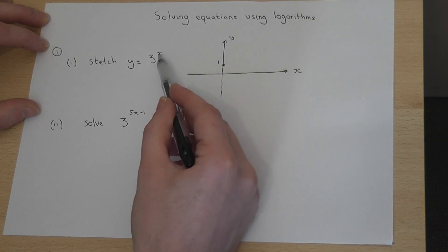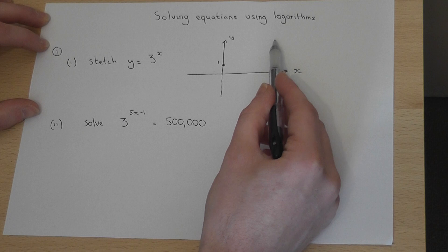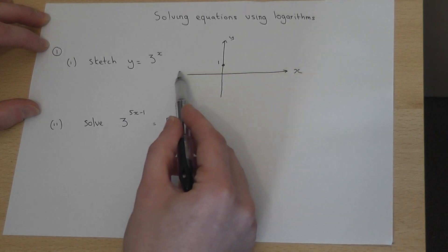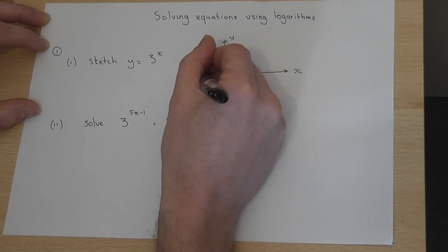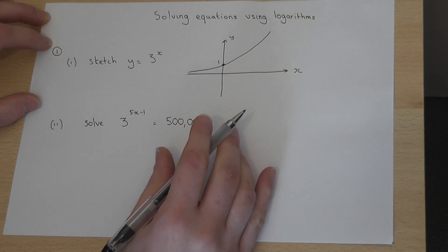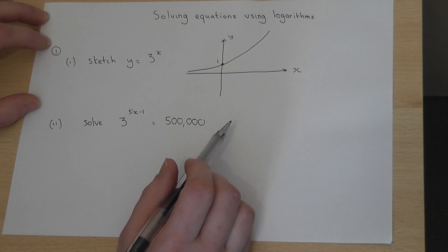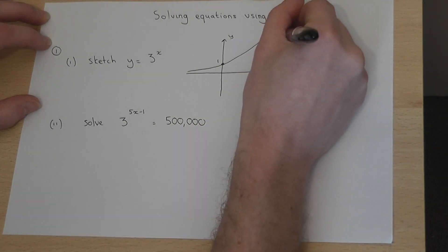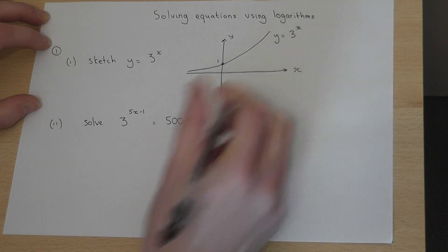However, as x decreases, the graph tends towards the x-axis. So the graph looks something like this. That's called the exponential growth graph. That's a sketch of y equals 3 to the power of x.